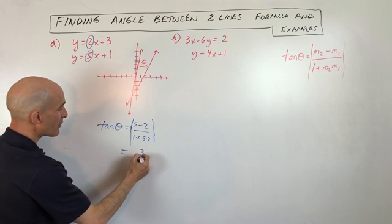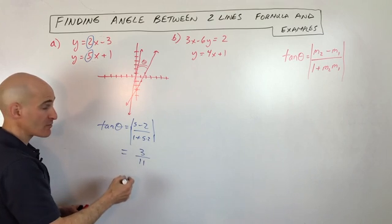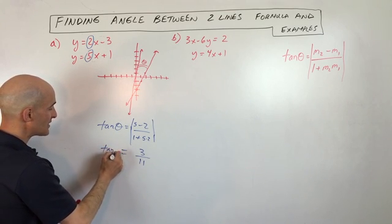So if we simplify that down, we get 3 over 10 plus 1, which is 11. The absolute value of that is still going to be positive 3/11ths. That's the tangent of theta.